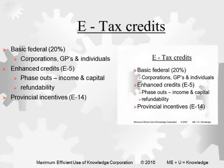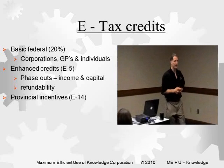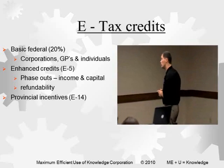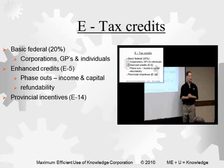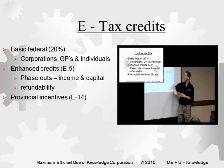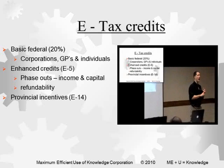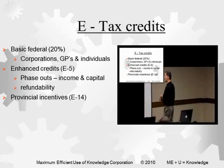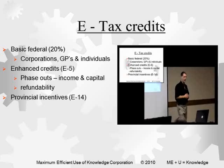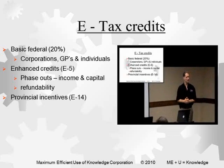The tax credits themselves fall at various rates. There's a basic federal credit of 20% for all types of corporations, general partnerships, and individuals on their personal tax returns — a T1. If you're something called a qualified Canadian-controlled private corporation — a qualified CCPC — there are enhanced credits that tend to be higher in percentage and tend to be refundable, meaning that if you have no taxes payable, you get the remaining credit plus interest as a refund in that year.